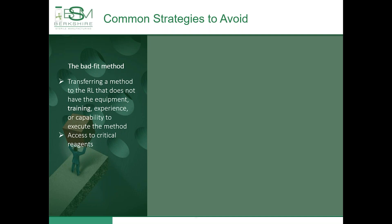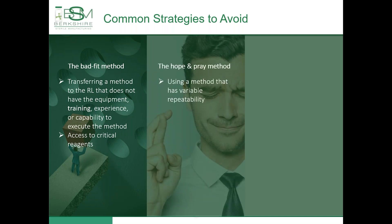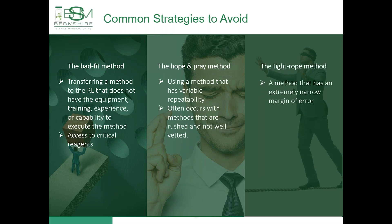Another common strategy to avoid is the hope and pray method. This is using a method that has variable repeatability and often occurs with methods that are rushed and not well vetted. The final common strategy to avoid is the tightrope method. This is a method that has an extremely narrow margin of error and requires extensive analyst training to perform correctly. We typically see the tightrope method fall into play when there are several steps involved, small volumes of material are used, or the criteria are artificially too tight to fall within a very close range to their target specification. In these types of methods, any small deviation would result in a failure — similar to how one wrong step could cause a tightrope walker to fall.